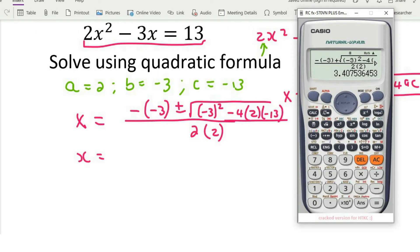Then to get your other answer, you push backspace many times, and then you change it to a minus. That's how you get your second answer, and it's going to be -1.91.